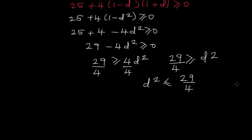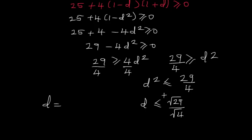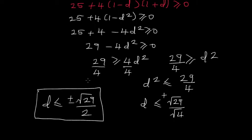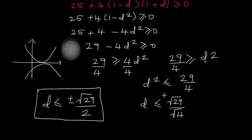Taking the square root of both sides, d must satisfy d less than or equal to plus or minus square root of 29 divided by 2. You can verify this on a calculator. There are four possible cases for the parabola: it could touch or cross the x-axis in different configurations, such as opening upward or downward with real solutions.